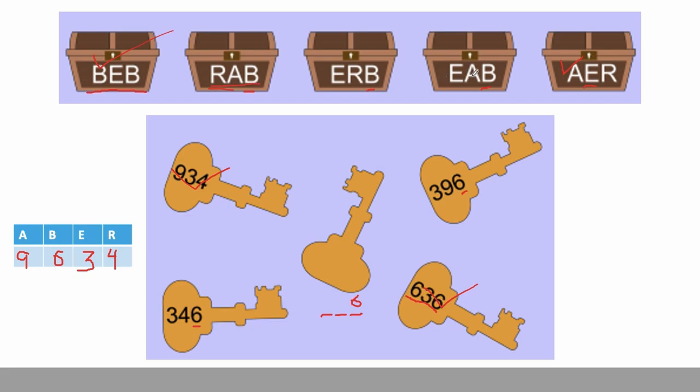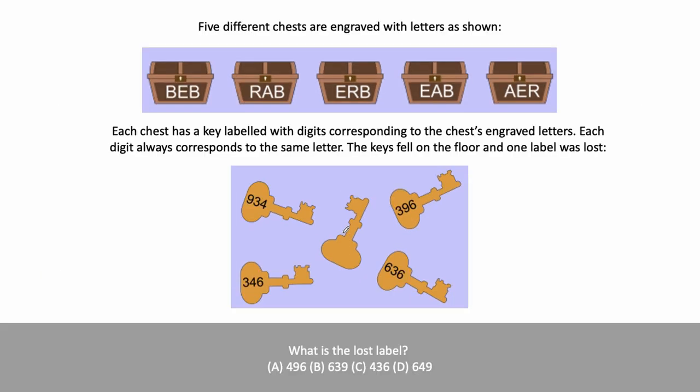And through that knowledge, we also know that A is 9. So this one, the fourth chest must be mapped to the top right key. And the third chest is mapped to the bottom left key. Now, through this knowledge, we know that the first letter is 4 because we already know what R is. And we also know what A is. So we know that the key should hold the numbers 496. And if we check the answers, we see that this indeed is answer selection A. And so we can confidently select number selection A as the correct answer.